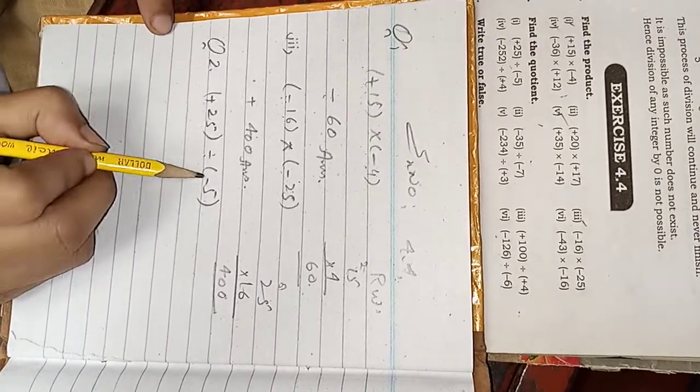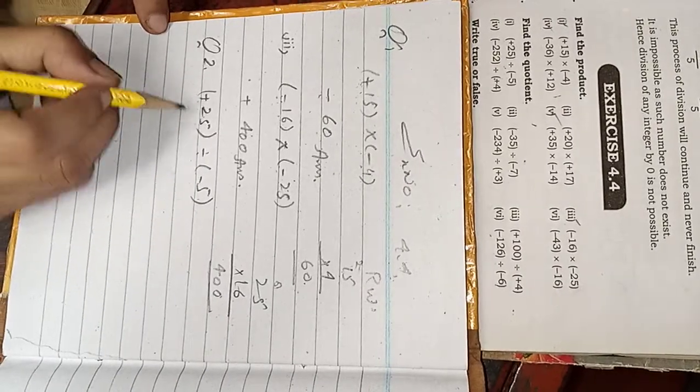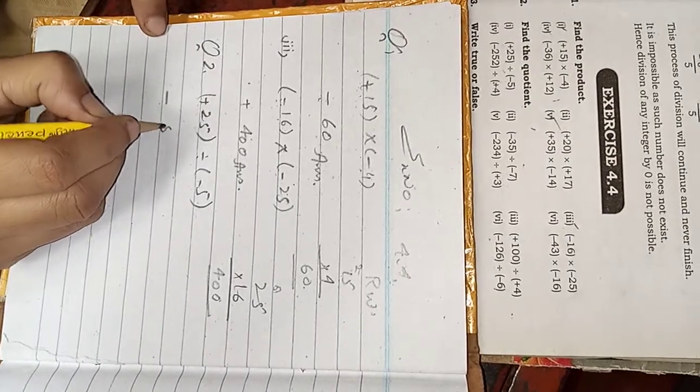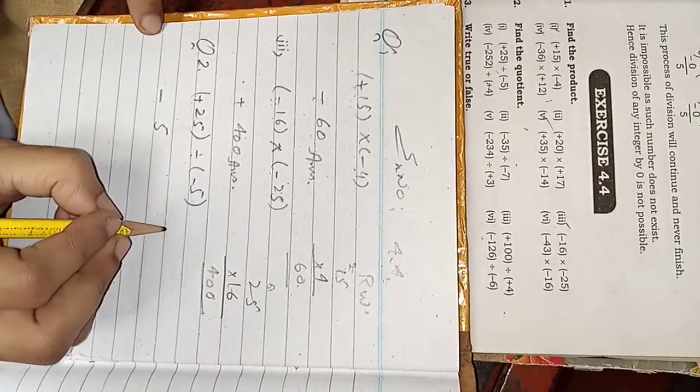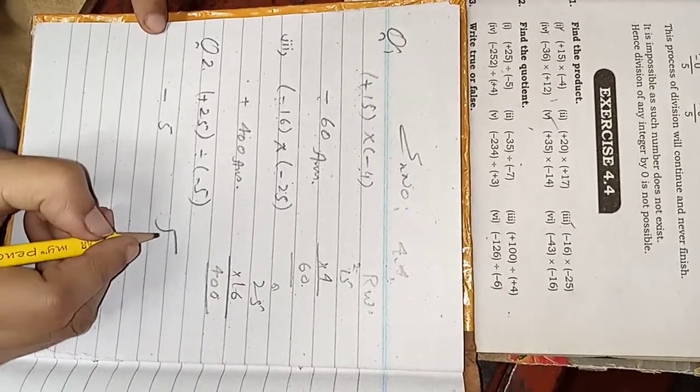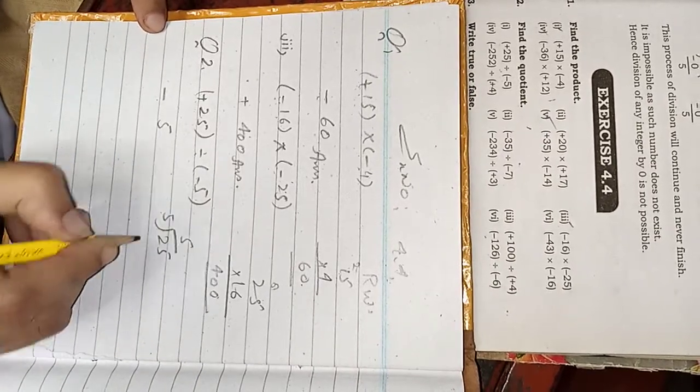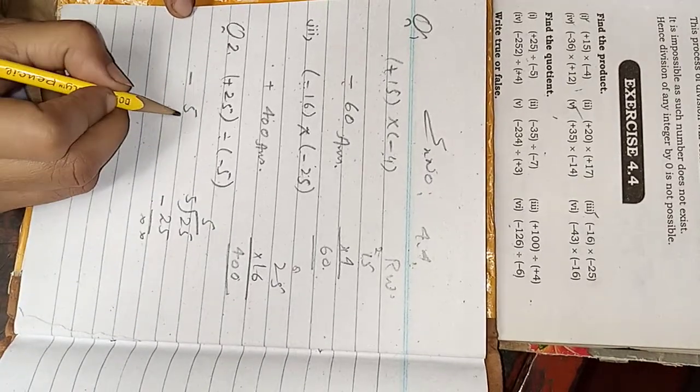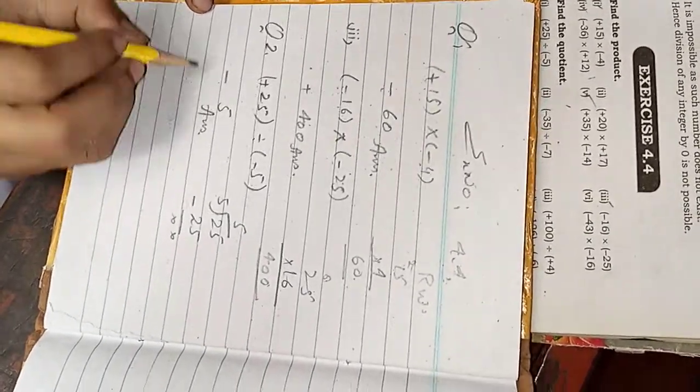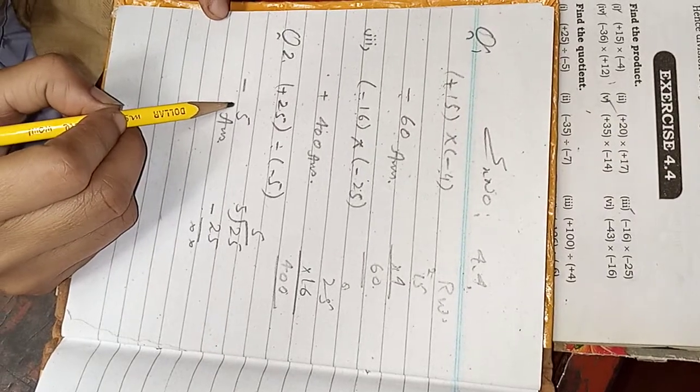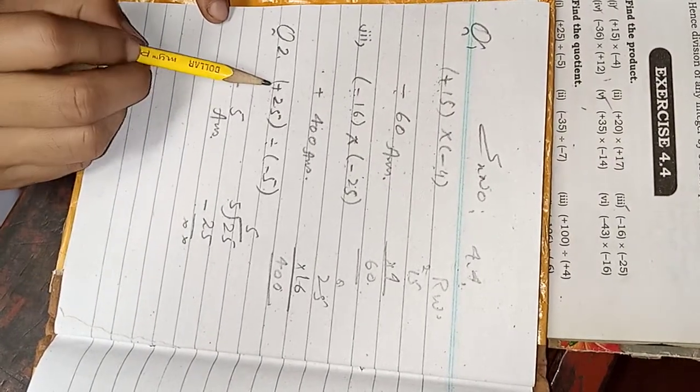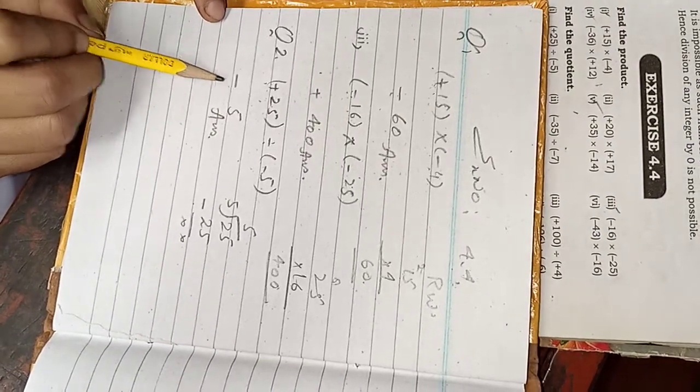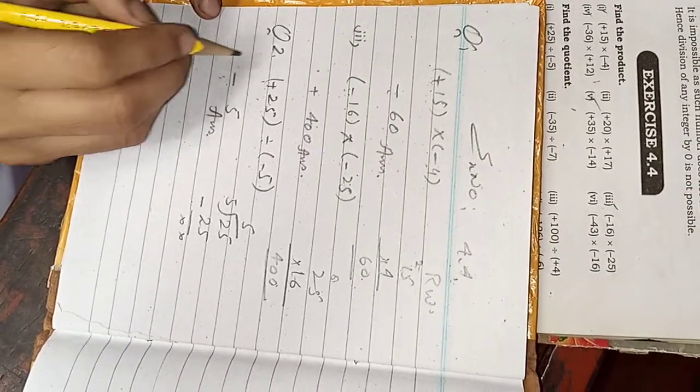We have here plus 35 divided by minus 5. Notice here there is also plus and minus. There are two different signs. We always have minus sign. Plus minus equals minus. 35 divided by 5. This is 7. Now we will prove here. Five sevens are 35. There is no remainder. This is quotient. Here we have minus 7. We have our answer. We have two opposite signs. When you divide, the sign is negative.